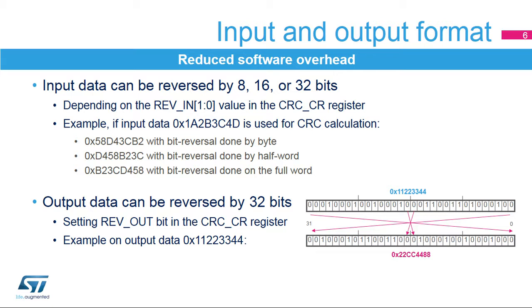For example, input data 0x1A2B3C4D is used for CRC calculation as 0x58D43CB2 with bit reversal done by byte, 0xD458B23C with bit reversal done by half-word, and 0xB23CD458 with bit reversal done on the full word. The output data can also be reversed by setting the REV_OUT bit in the CRC_CR register.